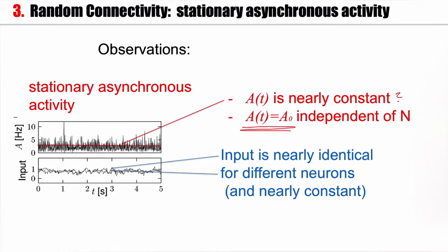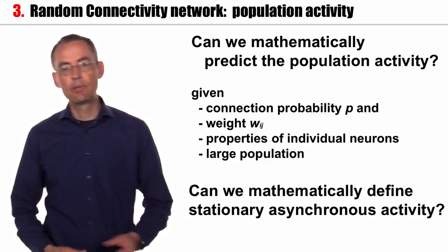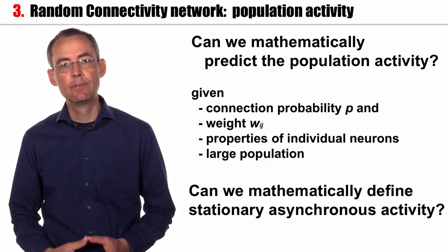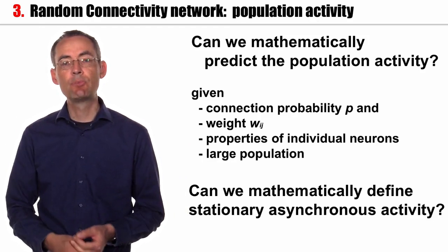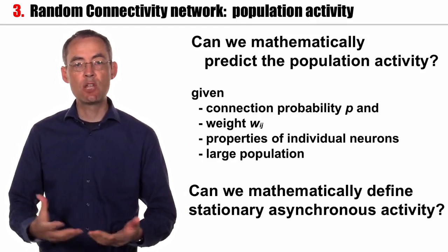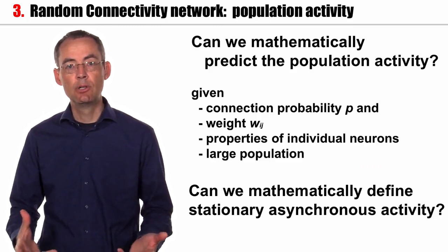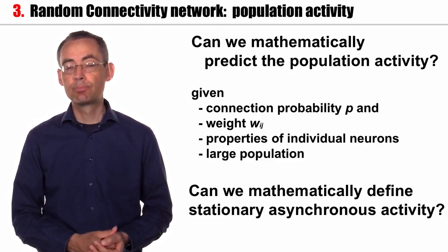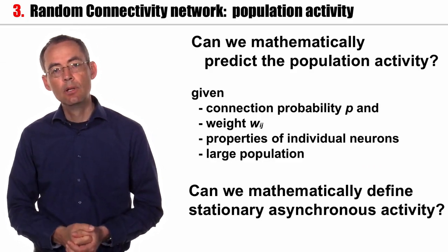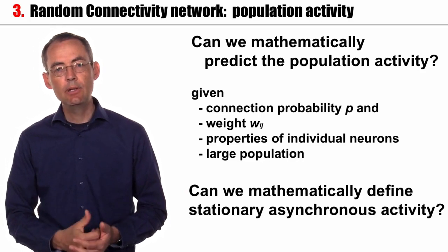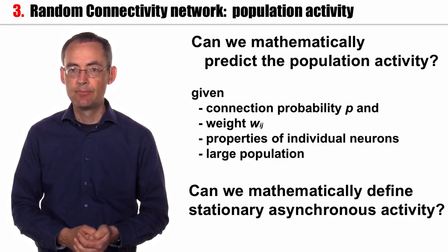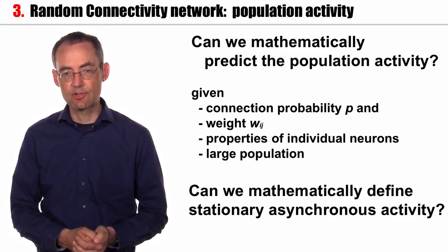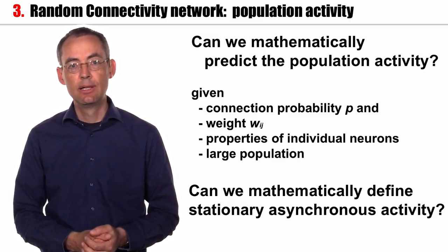This brings up a couple of questions from these simulated network observations. Can we mathematically predict the level of population activity A0 — the typical stationary value — based on connection probability and single neuron properties? Moreover, can we make the notion of asynchronous stationary activity mathematically more precise? These are the topics we will address in the next sections. But before we do that, let's have a look at the quiz.